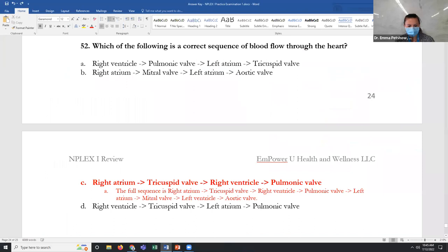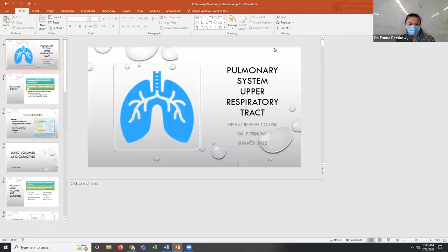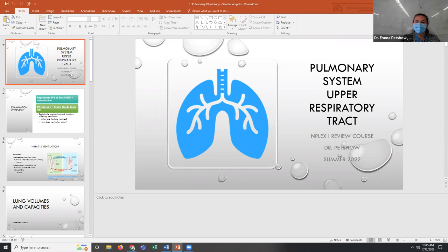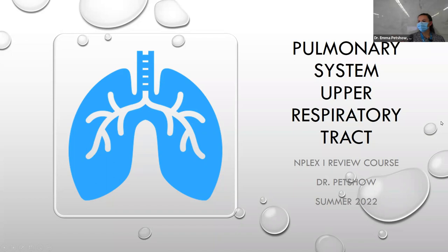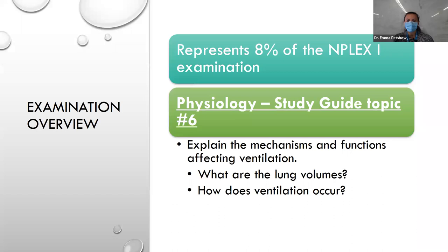Now we're moving to pulmonary — one J, pulmonary pathology. I put pulmonary with cardio because they're very much related. It's not going to be a huge portion of your NCLEX exam — about eight percent — but there are specific topics NCLEX likes, specifically ventilation, lung volumes, and perfusion. Those are the two main areas we'll focus on for pulmonary physiology.